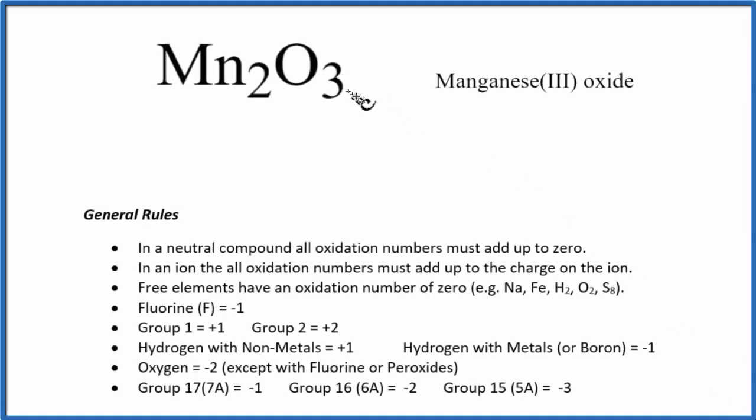To find the oxidation numbers for each element here in Mn2O3, that's manganese 3 oxide, we'll use these rules here. So manganese 3 oxide, Mn2O3, that's a neutral compound. It's neutral because there's not a plus or minus like you'd see with an ion.